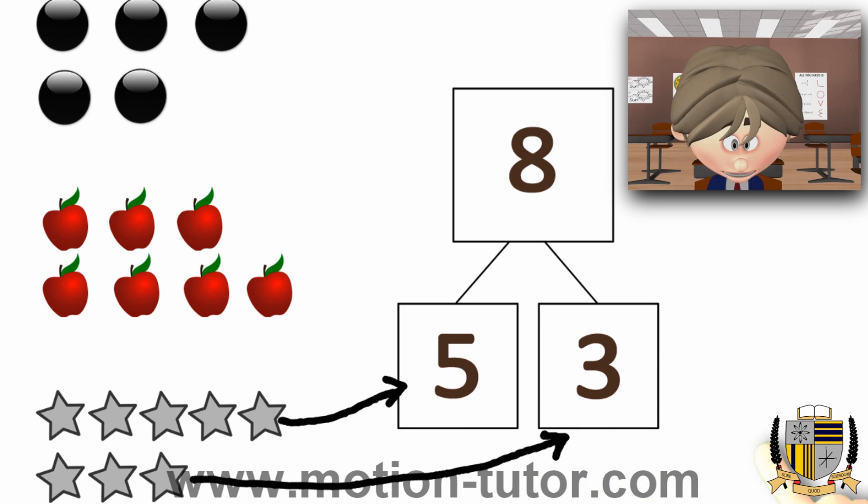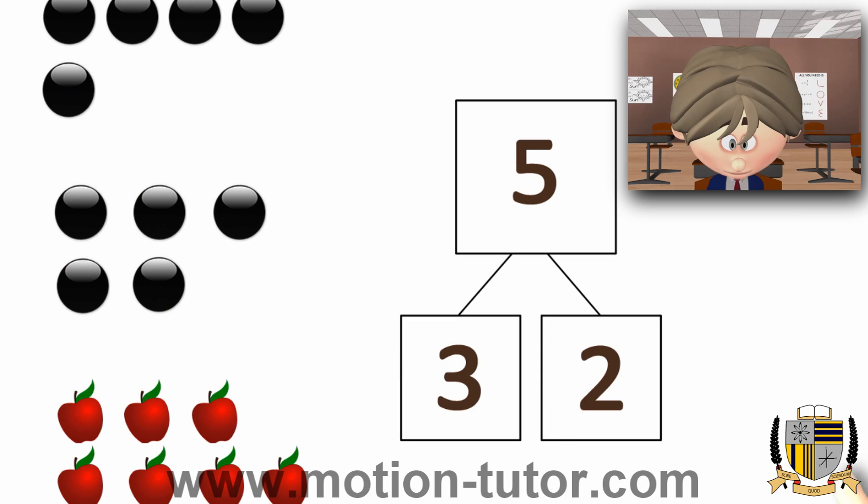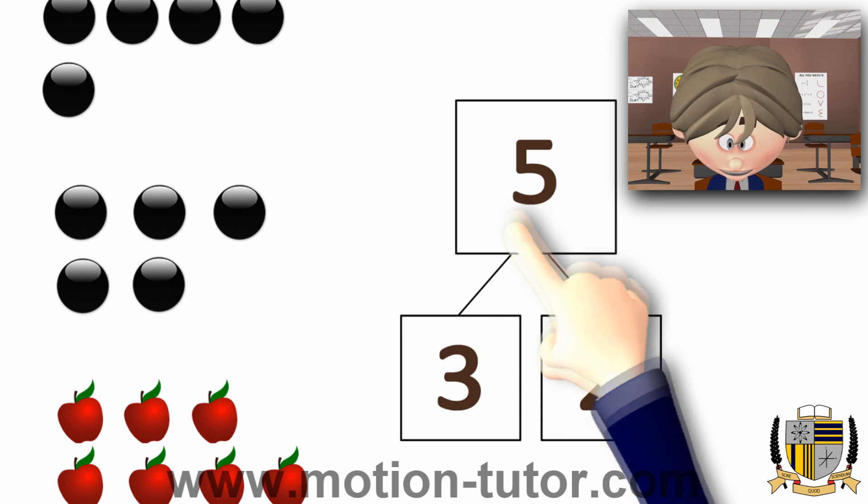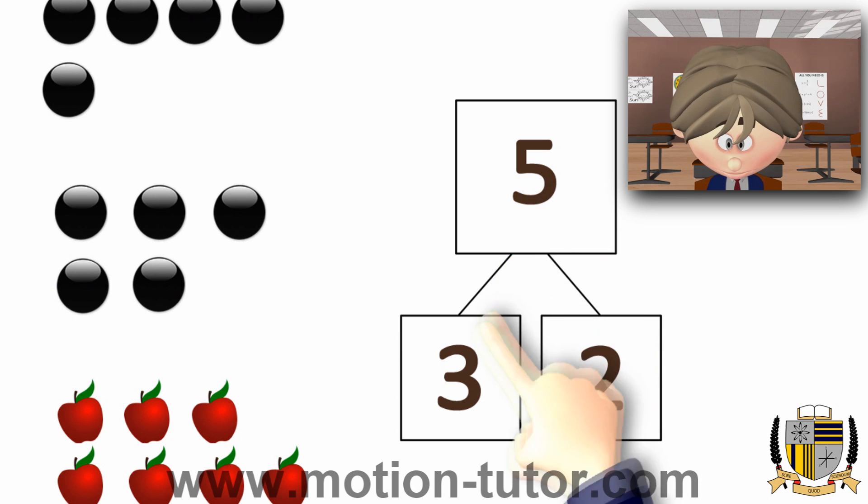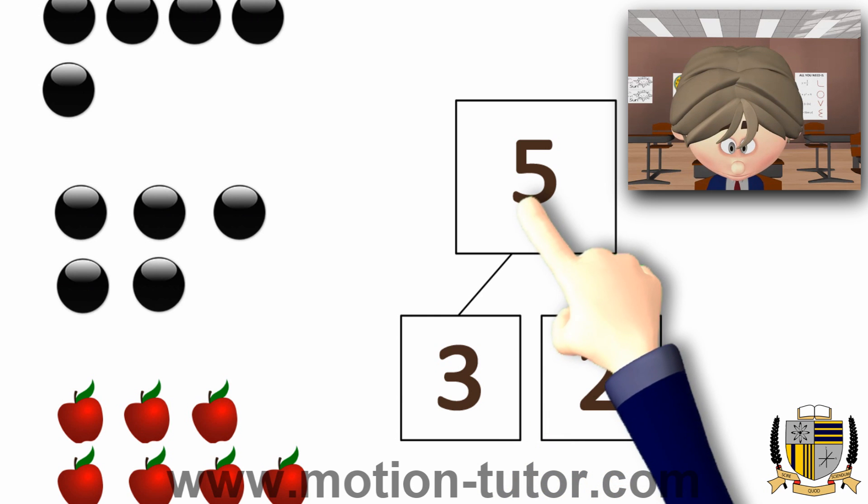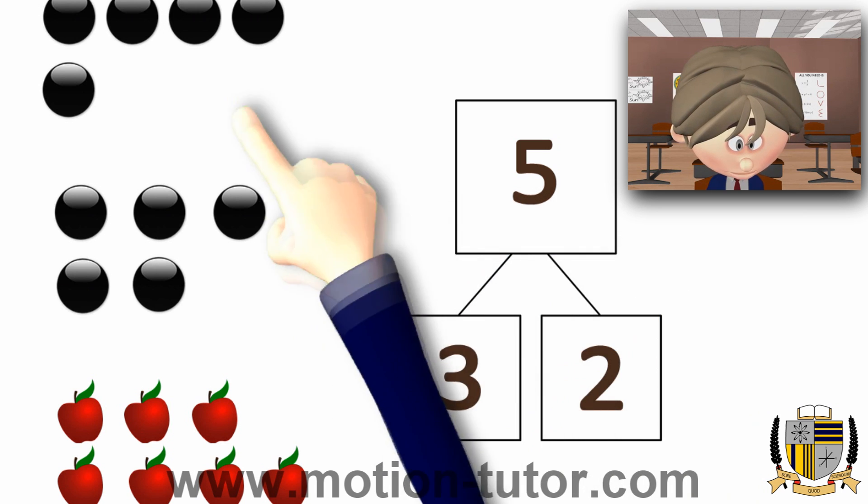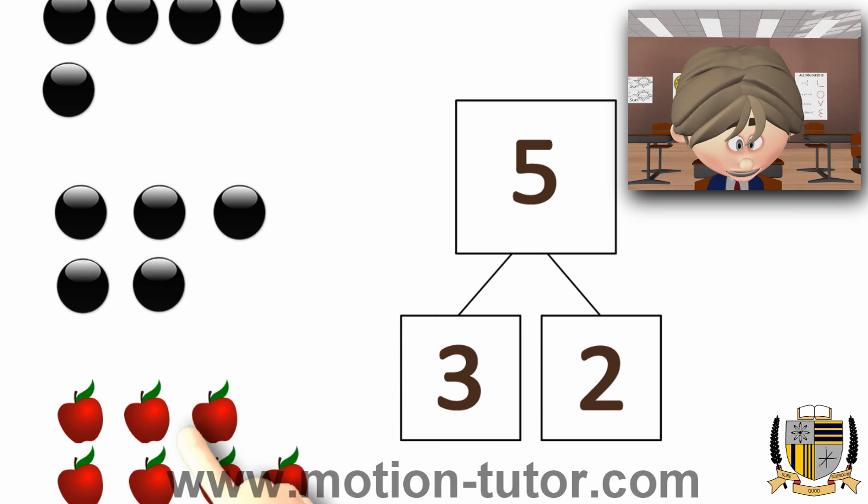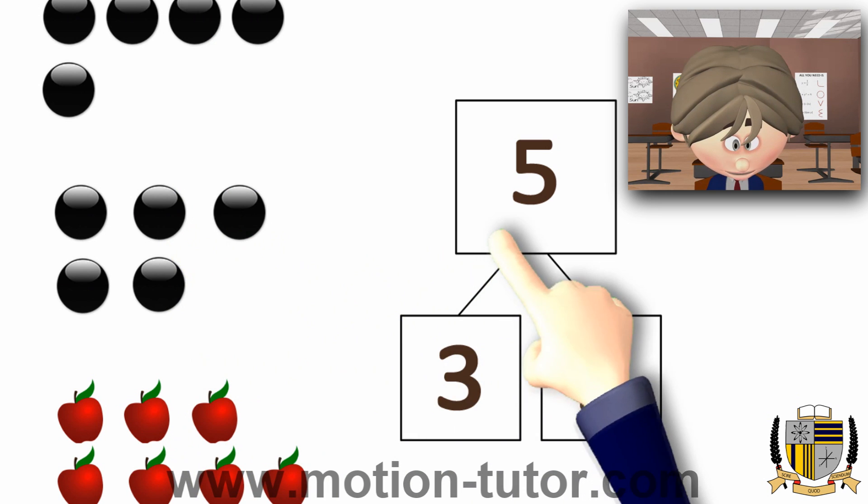Alright, let's go on to another example. Looking at this, we have 5 and that is being represented by a 3 and a 2. So, these 3 and 2, put them together, you get 5. Now, which one of these images matches the number bond over here?